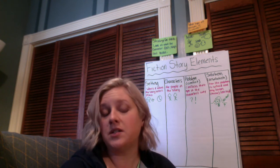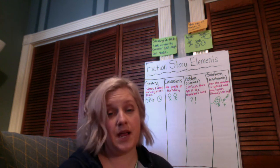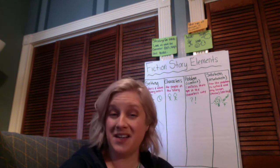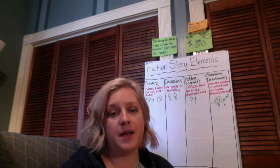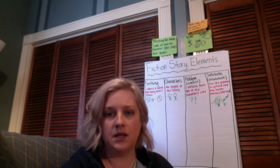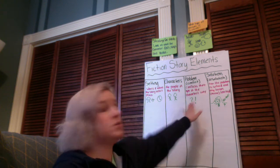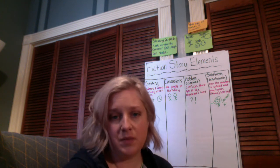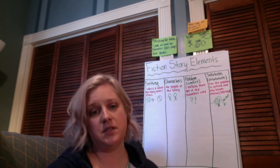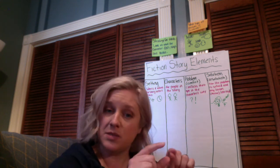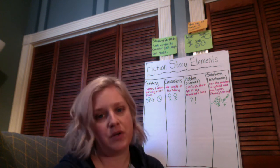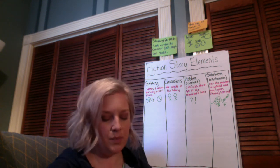Usually a solution or resolution is found at the very end of a short story. So if you're looking at a Raz Kids book, look at the ending. If it's a chapter book, the solution to the main conflict also usually appears at the end of the book. However, sometimes you have chapters where there's a very small problem and you have a solution by the end of the chapter.